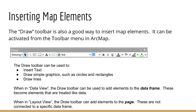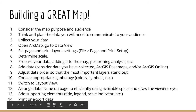Be careful with the draw toolbar, because it behaves differently in data view versus layout view. In data view, elements drawn are treated like data — they pan and zoom with the map. In layout view, if the data frame isn't focused when you use the draw toolbar, the text won't move with the data when you pan the map. You need to focus the data frame in layout view if you want drawn elements to move with the data.